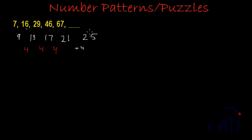And if this is the difference, the next term will be 67 plus 25. 7 plus 5 is 12, 1 carried forward, 6 plus 1 is 7, 8, 9, so 92. So the next term should be 92.